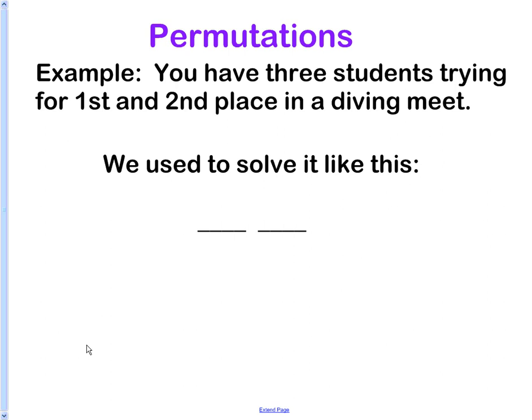Yesterday we did permutations, and here's a typical problem. We have three students, three kids, that are trying for first and second place in a diving meet. That's why I only have two blanks, because there's two places. And first place, how many choices do I have for that spot?